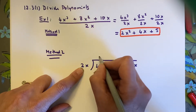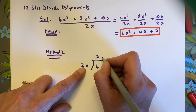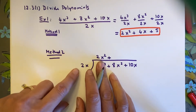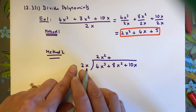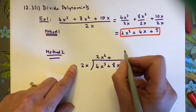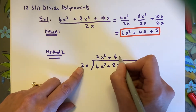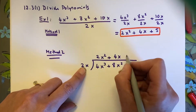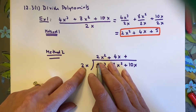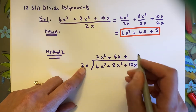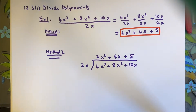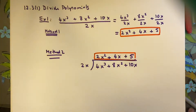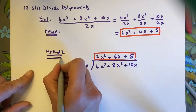What times 2 gives me 4? That's 2. What times x gives me x cubed? That's x squared. So the first term is 2x squared. Then what times 2x gives me 8x squared? 4 times 2 is 8, and x times x is x squared, so 4x. Finally, what times 2x gives me 10x? That's 5. Method 2 gives the same answer as method 1.